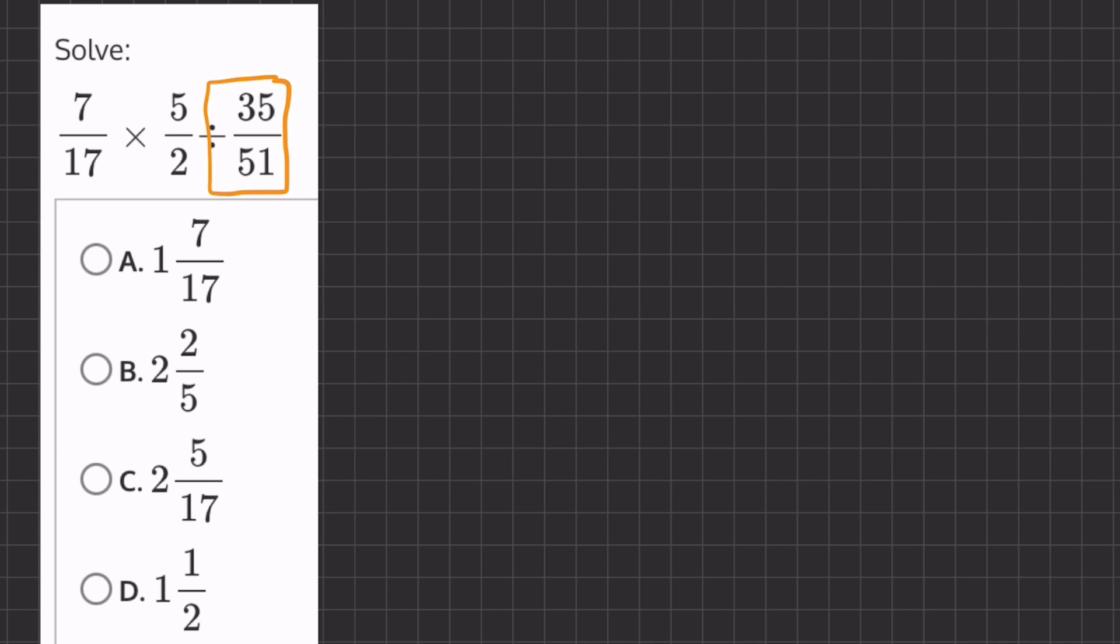So if we take 7 over 17, and we multiply it by 5 over 2, and we multiply this fraction by its reciprocal, so we have 51 over 35.